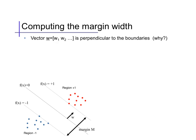Now we can compute the margin geometrically in terms of the parameters. The first thing to note is that the vector defined by the weights w, the coefficients of the features, is perpendicular to the decision boundary.